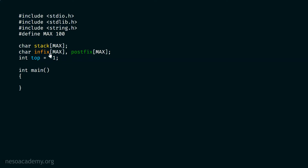These two arrays are declared globally so that every function can use them. Later on, we will have many functions that will use these arrays. Instead of passing them locally, I prefer to declare them globally. Then we have this top variable, which is an integer variable that holds the index of the stack and indicates where the topmost element in the stack is. Currently, top is minus one, which means the stack is empty.